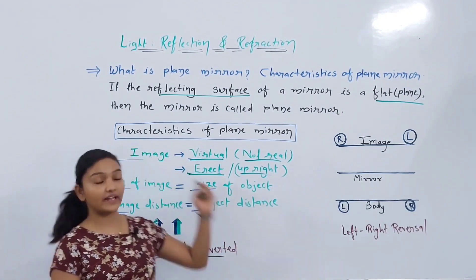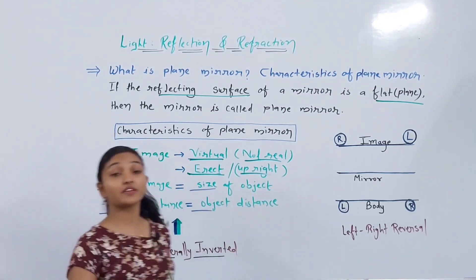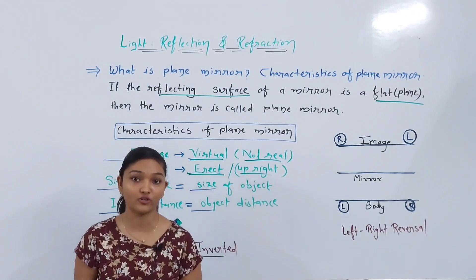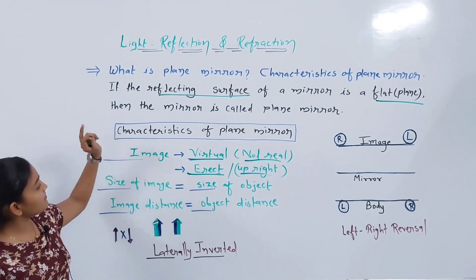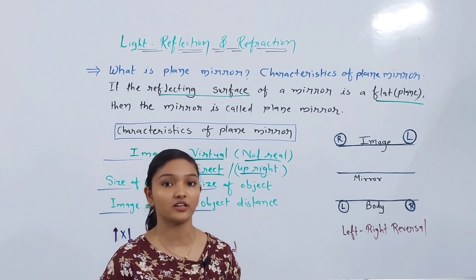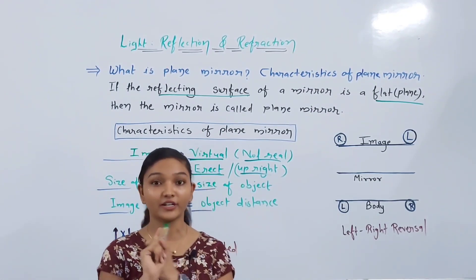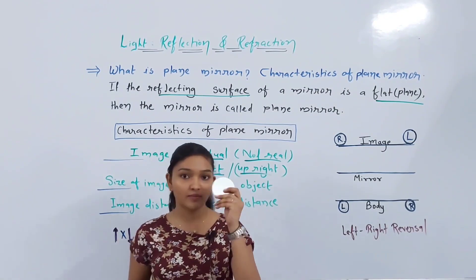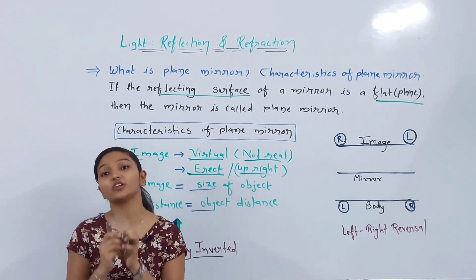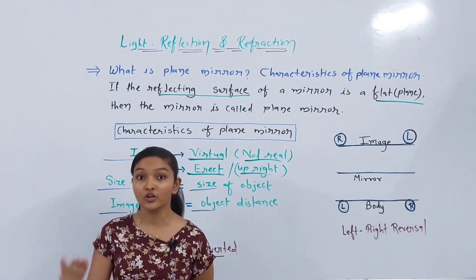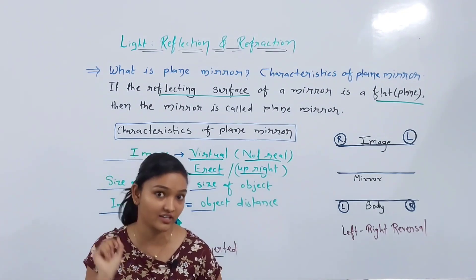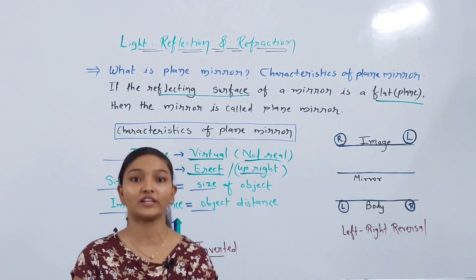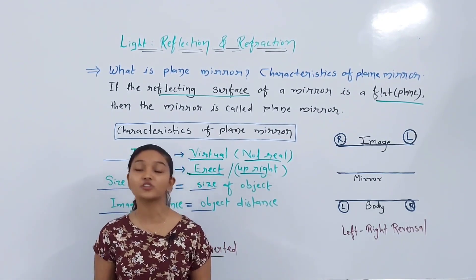Now let's see some characteristics of plain mirror. First, what kind of image is formed? When there is a real person in front of you, his light rays reach your eyes and a real image is formed. But what is the image in a mirror? You are standing and you see your image — that image is a virtual image. It is not real, but it is your image, so we call it a virtual image.